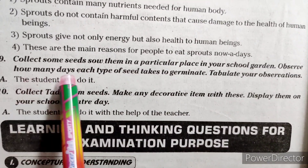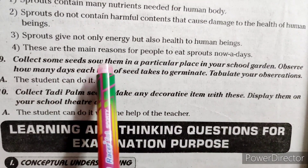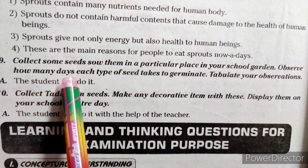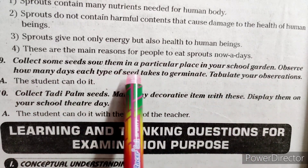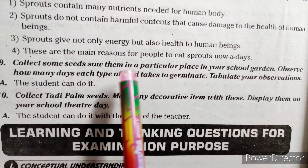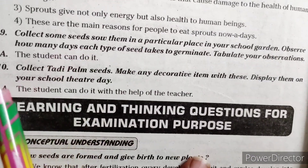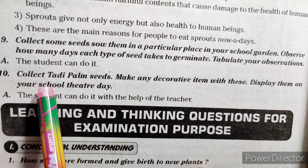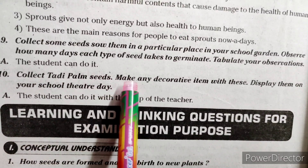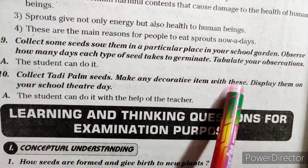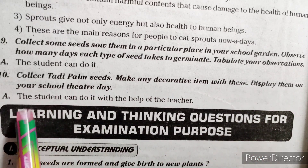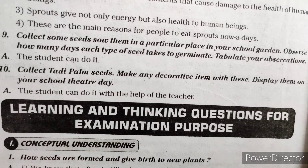Ninth question: Collect some seeds. Sow them in a particular place in your school garden. Observe how many days each type of seed takes to germinate and tabulate your observations — this you have to do by yourself. Also collect toddy palm seeds, make decorative items with them, and display them on your school theater day — this also you have to do by yourself.